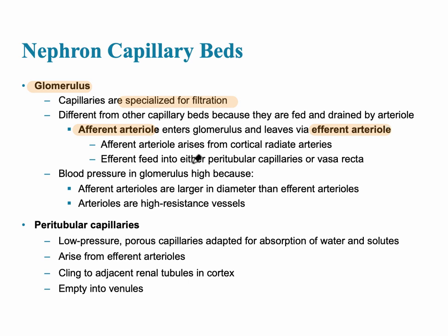The afferent arteriole arises from the cortical radiate artery, which radiates throughout the cortex. The efferent arteriole leads to one of two capillary types: if it's a cortical nephron, there are peritubular capillaries; if it's a juxtamedullary nephron, there is a vasa recta. What is unique about the glomerular capillary is that blood pressure is very high — much higher than capillaries anywhere else in the body.